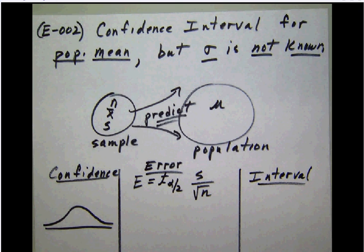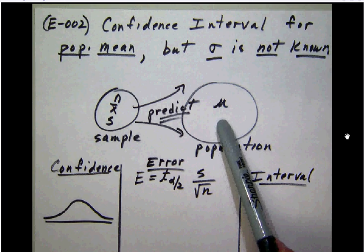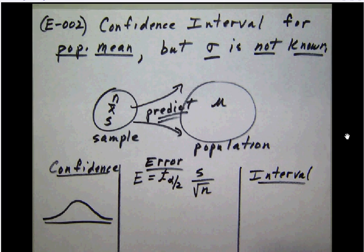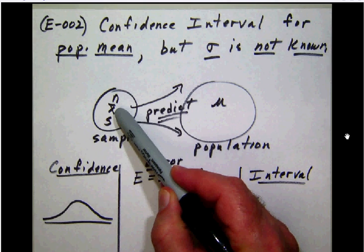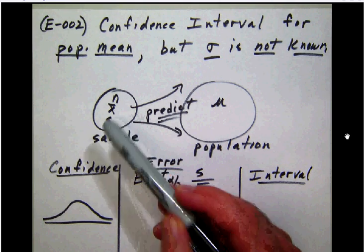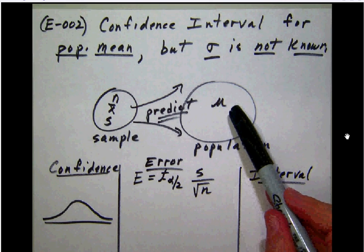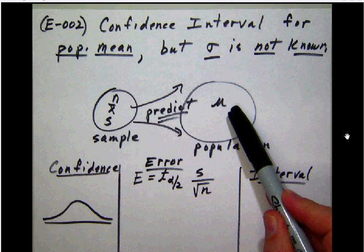Now once again we're using a sample in order to predict a population mean, but this time we've got a little bit different information which makes this problem tricky. We have a sample size n, we have a sample mean x bar, but this time we have the sample standard deviation. We do not have the population standard deviation, and so in this case we are going to have to use a t interval in order to calculate our confidence.